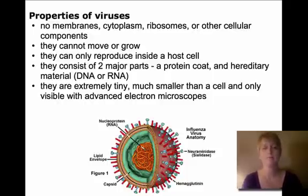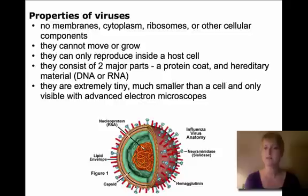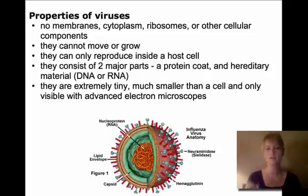What viruses are made of is actually two major parts: a protein coat and the DNA or RNA inside of it. So it's really just a package of hereditary material. They're extremely tiny — much smaller than bacteria — and we can't see a virus unless we have really advanced electron microscopes. There's no way to see one under a compound microscope.